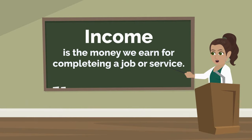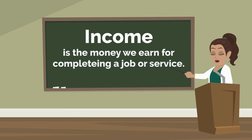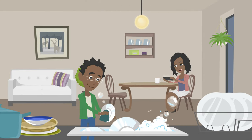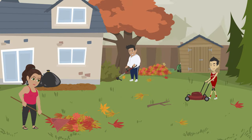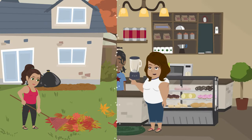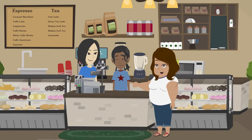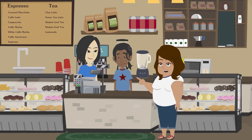First, we need to know what our income is. Income is money we earn for completing a job or a service. We can earn income right now by doing things like chores around the house, washing the dishes, mowing the lawn, or even by getting a part-time job working in a bakery.